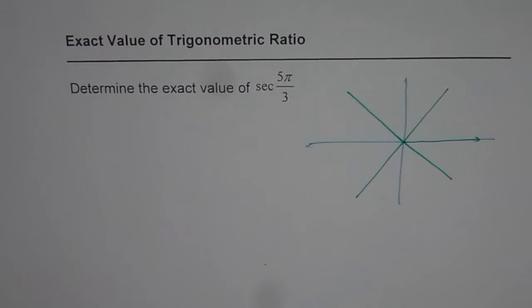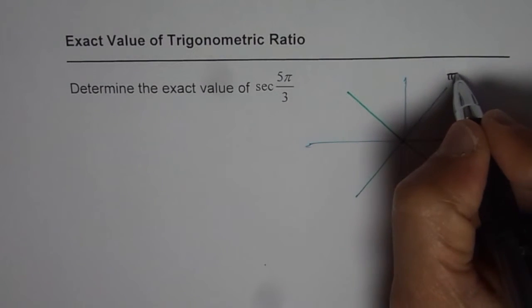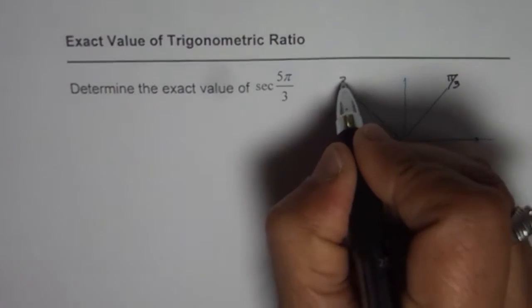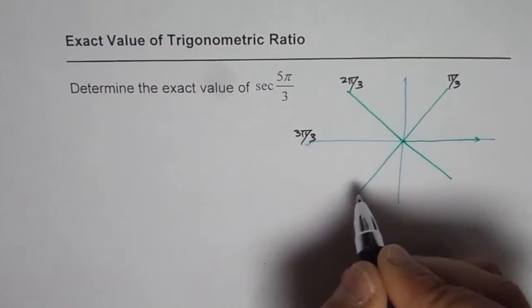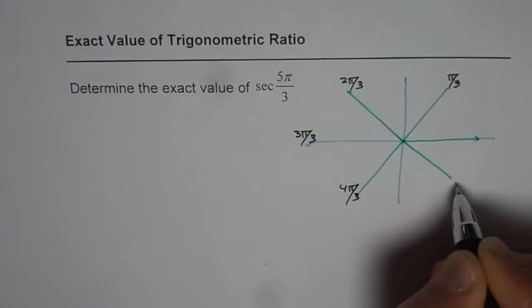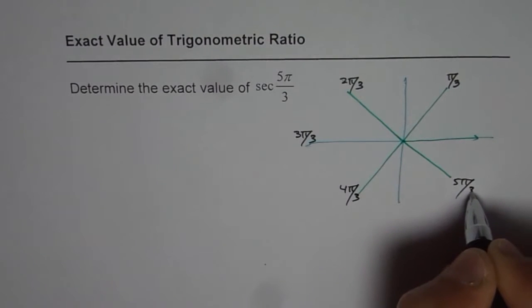As you can see here, that is pi by 3, this is 2 pi by 3, this is 3 pi by 3, 4 pi by 3, and this is 5 pi by 3. So 5 pi by 3 is this angle which we are talking about.